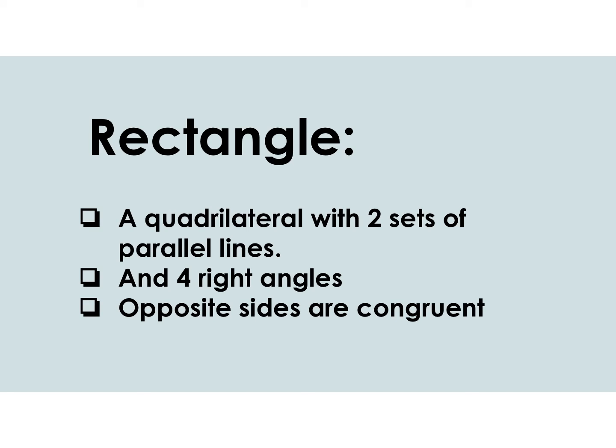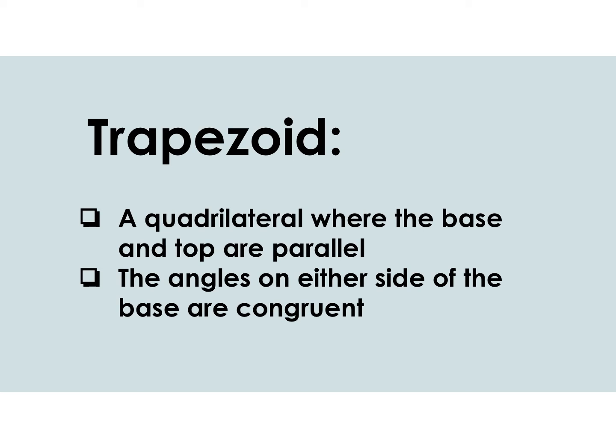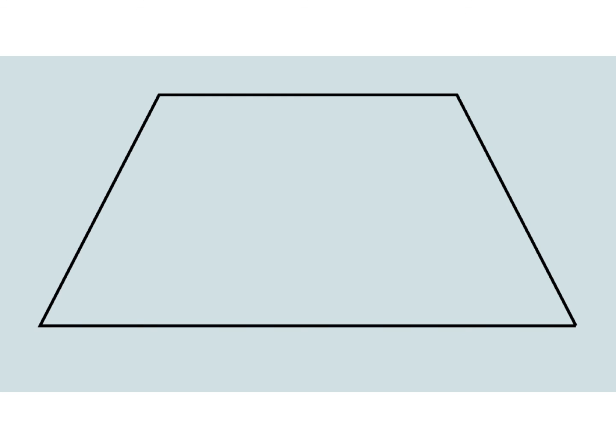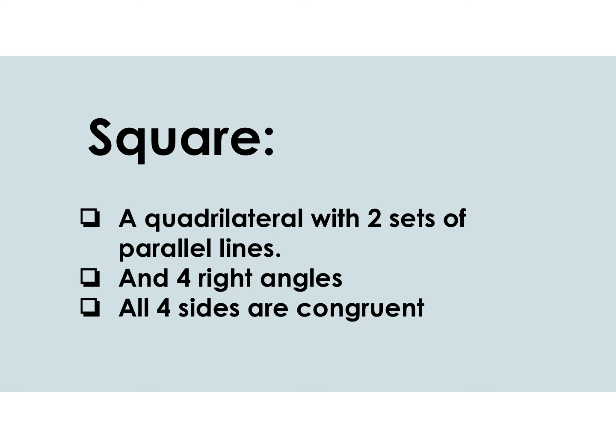Here are the attributes of a rectangle. A rectangle is a quadrilateral with two sets of parallel lines and four right angles. Opposite angles are congruent. Here are the attributes of a trapezoid — a trapezoid is a quadrilateral where the base and the top are parallel. The angles on either side of the base are congruent. Congruent just means equivalent or equal. A square is a quadrilateral with two sets of parallel lines, four right angles, and all four sides are congruent.